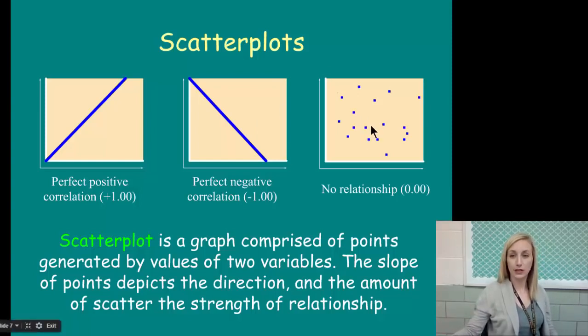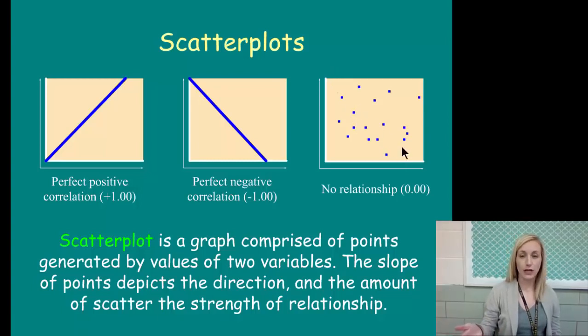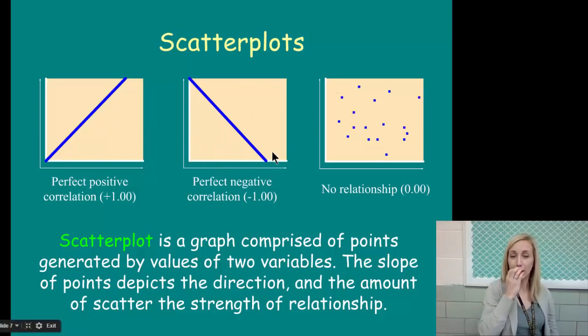The third graph shows no relationship, because all the points here, you can't determine a line of best fit. You could maybe say that that's negative, but it's so scattered that there's really no line of best fit. If the scatter is less than the scatter in this third graph, but more so than in these perfect correlations, if you can determine a line of best fit, there's some kind of relationship here. The less the scatter, the stronger the relationship.